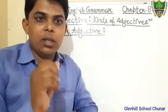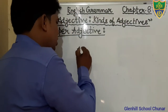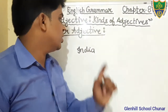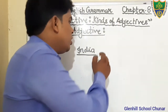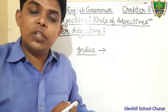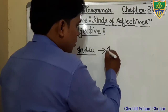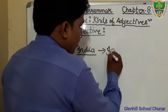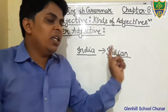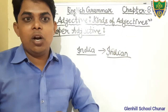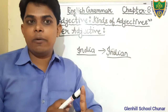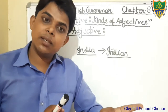For example, India — India is the name of a particular country, so India is a Proper Noun. But when we say 'Indian,' that is a Proper Adjective. Similarly, Europe is a Proper Noun but European is a Proper Adjective. America is a Proper Noun but American is a Proper Adjective.